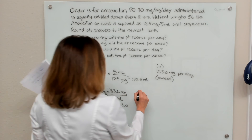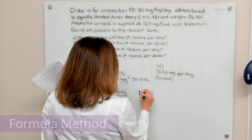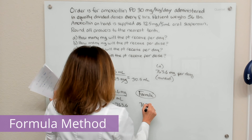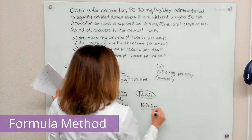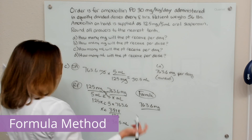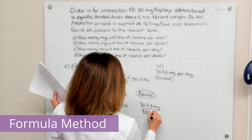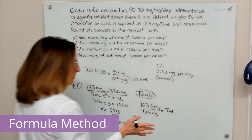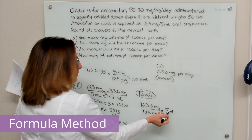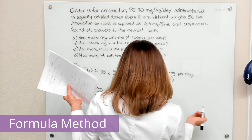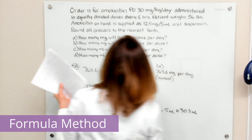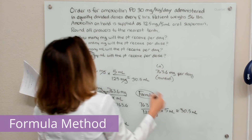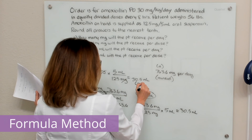Finally, we can also solve part C with the formula method. The formula is desired dose over dose on hand, times vehicle. Our desired dose is 763.6 milligrams, the dose we have is 125 milligrams, and the vehicle is 5 mL. Doing this math again gives us 30.5 mL per day, rounded to the nearest tenth.